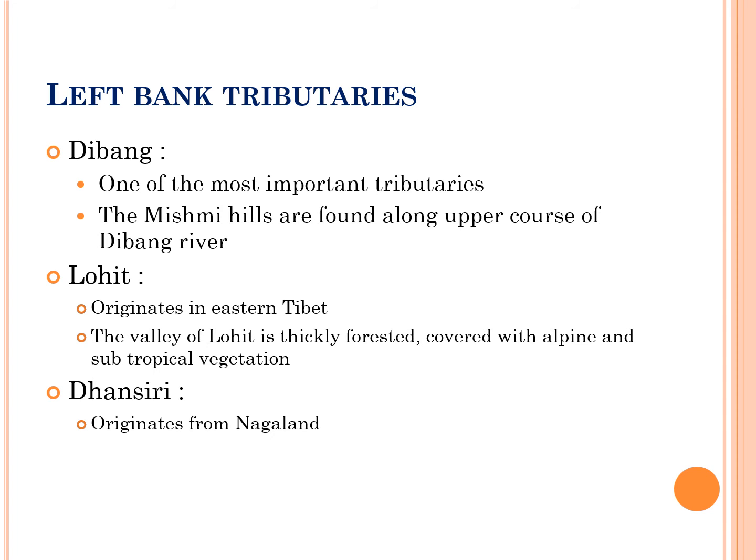The third left bank tributary is Dansiri. It originates from Nagaland and is the main river of Golaghat district of Assam and Dimapur district of Nagaland state. There are numerous perennial waterlogged swampy regions associated with this Dansiri river.